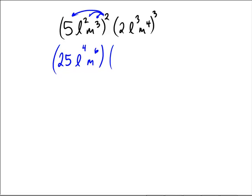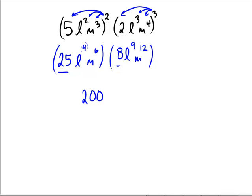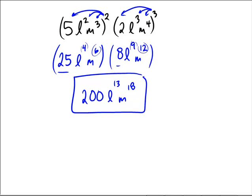For the other part, we have cubing going on: 2 cubed is 8, l cubed cubed is l to the 9th, and m to the 4th cubed is m to the 12th. Now combine: 25 times 8 is 200. 4 copies and 9 copies of l give a total of l to the 13th. And 6 and 12 copies of m gives us m to the 18th. So our final answer is 200 l to the 13th m to the 18th.